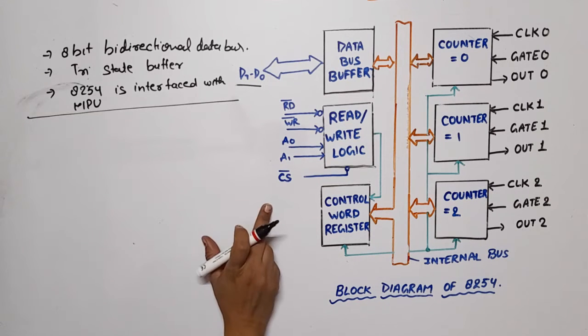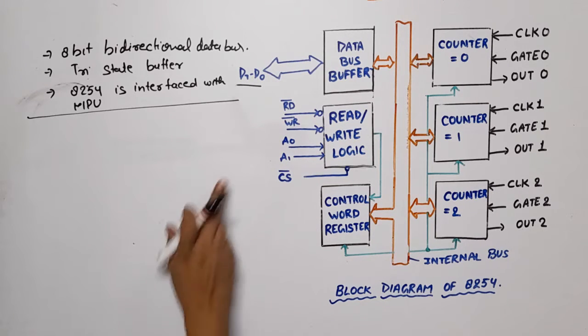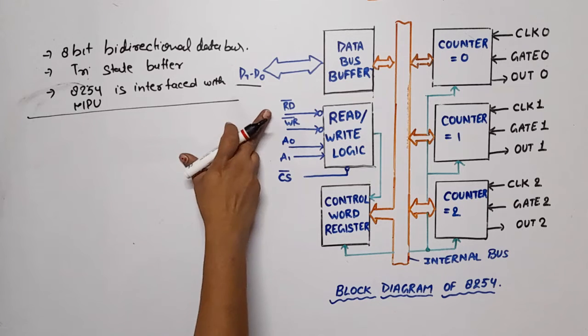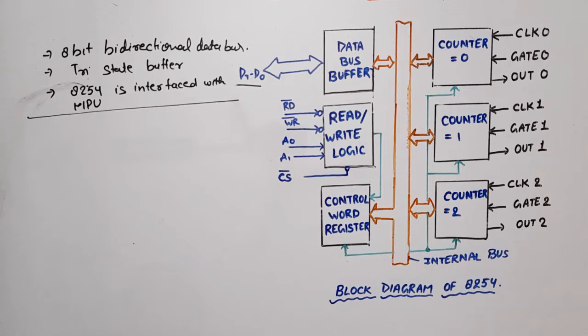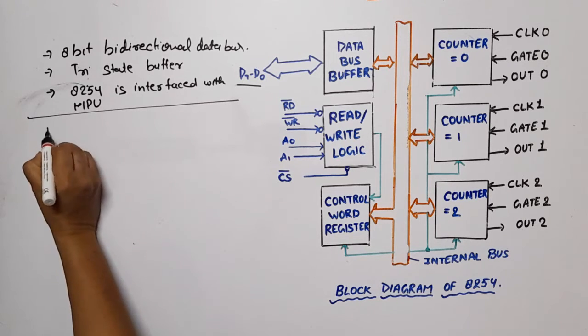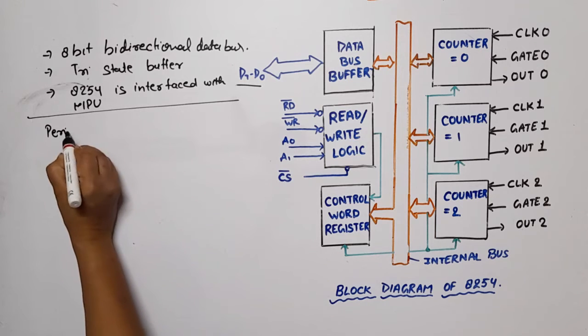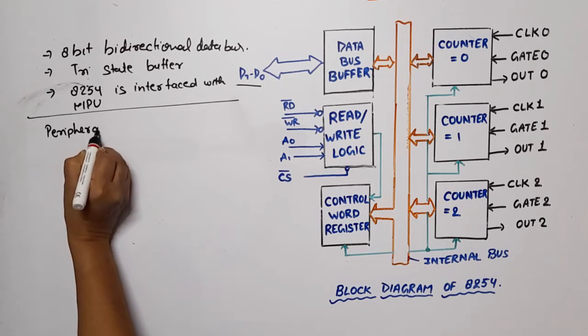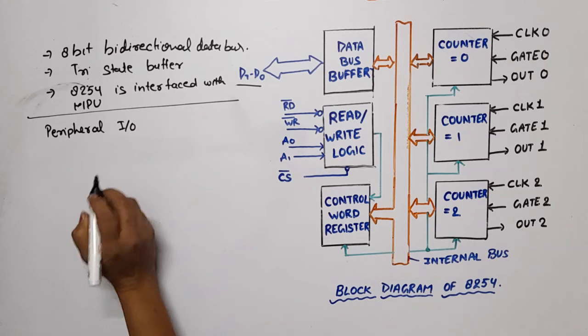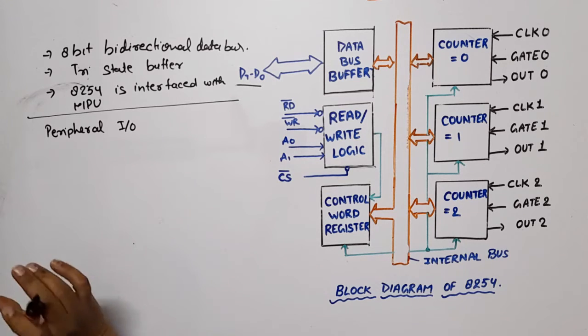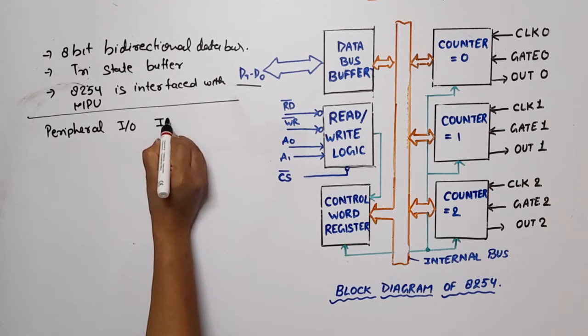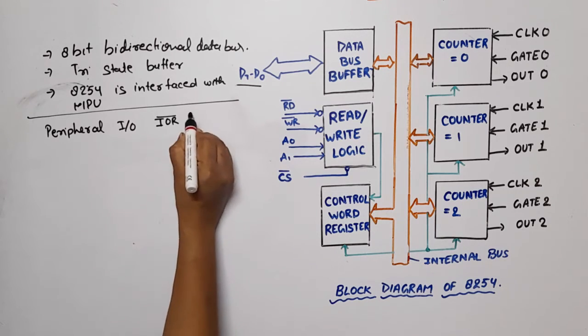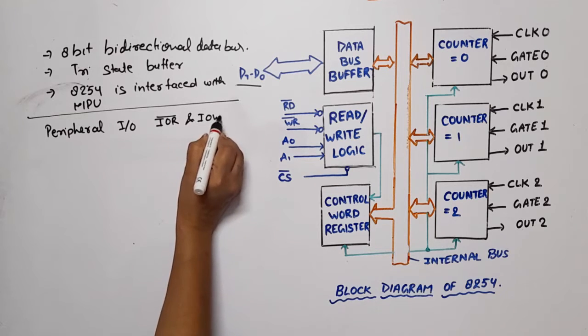Now we will discuss this block, this is read-write logic. There is 5 pins, so one by one discuss. First of all read bar and write bar, these are control signals, will be connected with the control signals of microprocessor unit. But remember that if microprocessor is connected in peripheral input-output mapped,